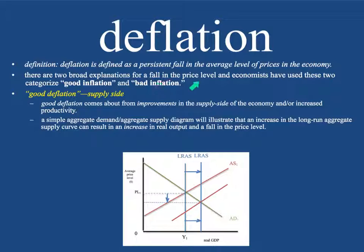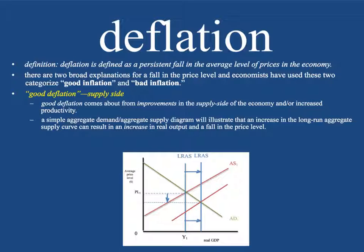There are two broad explanations for a fall in the price level, and economists have used these two categories: good deflation and bad deflation. Good deflation comes about from improvements in the supply side of the economy and/or in productivity. A simple aggregate demand and supply diagram will illustrate that an increase in the long-run aggregate supply curve can result in an increase in real output and a fall in the price level.